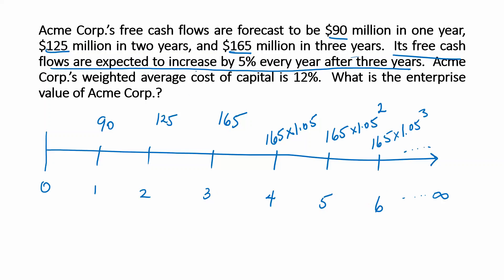Acme Corporation's weighted average cost of capital is 12%, so that's the rate at which we're going to discount cash flows. The enterprise value is the present value of these cash flows.